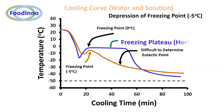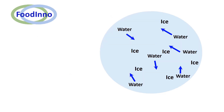For pure water, the cooling curve shows a horizontal freezing plateau — a constant temperature at 0°C until all water turns to ice. However, in the case of a solution, the freezing temperature decreases with time. After the freezing point, a critical mass of ice forms from the solution and freezing progresses.